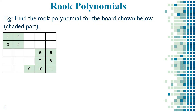Now let us consider an example so that we can understand the product formula easily. Find the rook polynomial for the board shown below — that is, the shaded part. We can observe that for the expansion formula we used the unshaded parts with numbers to place the rook, whereas in the product formula we are using the shaded parts to place the rook because they are the disjoint subsets. Name this subboard as C1 and this subboard as C2.